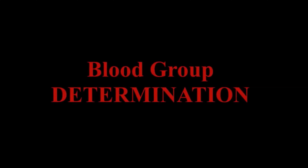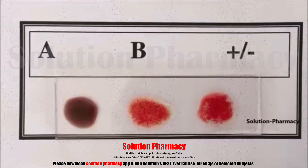Hello friends, welcome to the channel Solution. Today in this video we will show you how we can identify the blood group — the method for determination of blood group by using the ABO system. This video is also available in Hindi; the explanation link is given in the description box. First of all, let's know the principle of blood group determination as per the ABO blood grouping system.